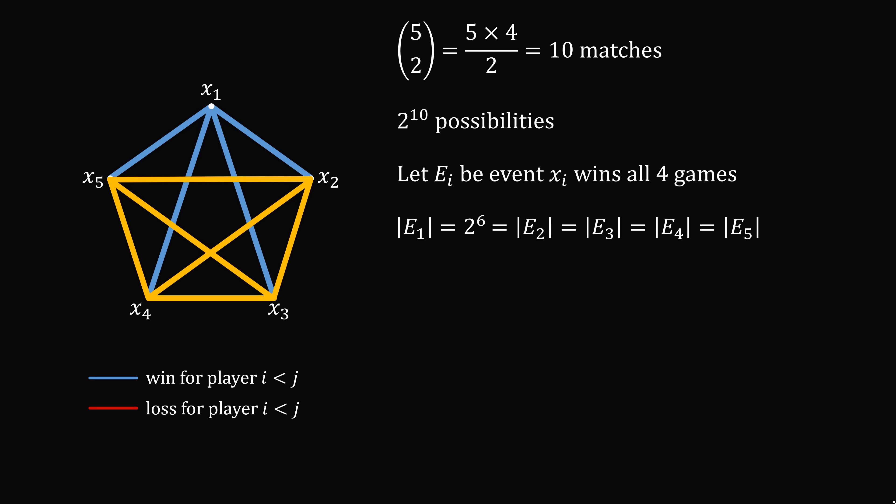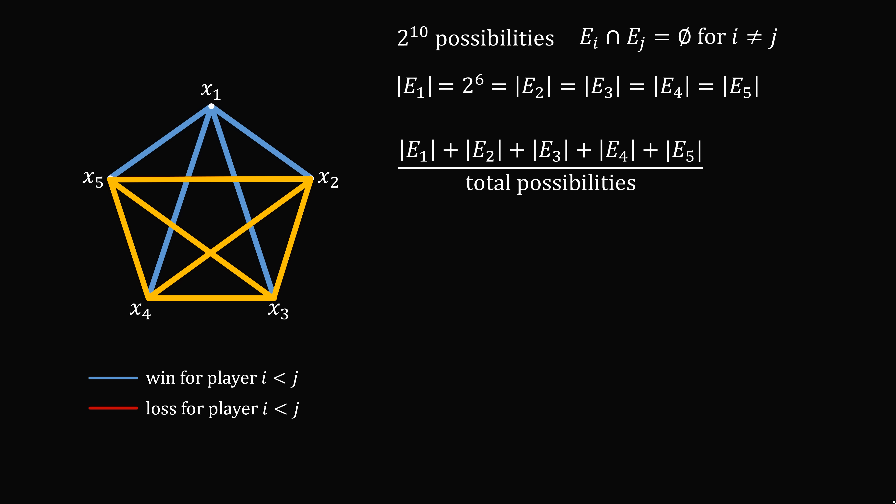Here's a key part of the problem: e1 and e2 have an empty intersection. Why is that? If player 1 wins all of her games, since player 1 has played all of the other players, that would deal a loss to all of the other players. So it's not possible that one player wins all their matches and some other player also wins all of their matches. These must be mutually exclusive events. So now we can count the total number of outcomes in e1, e2, e3, e4, and e5, divided by the total number of possibilities.